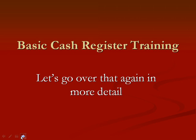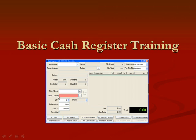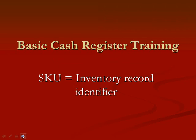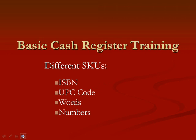We went over that kind of fast, so let's do it again in a little more detail. Step number one: enter a SKU — tell Anthology what it is the customer wishes to purchase. You're going to enter the SKU right here, and Anthology is going to look for that inventory record and then enter it into the cash register. A SKU is an inventory record identifier — it's how Anthology knows what record to bring in. There are different kinds of SKUs: SKUs for books and SKUs for non-books. For books, it's straightforward — it's the ISBN number, either ISBN 10 or ISBN 13. For non-books, you might have a UPC code, or words, numbers, or any combination of those.